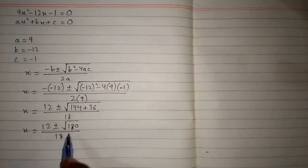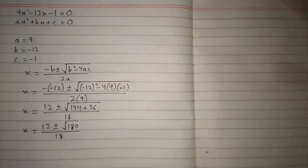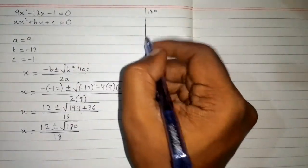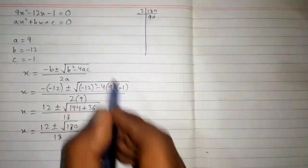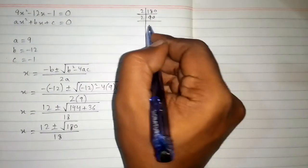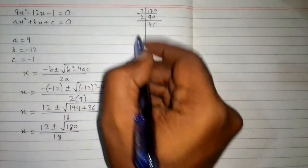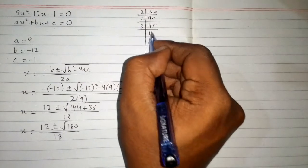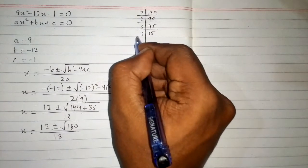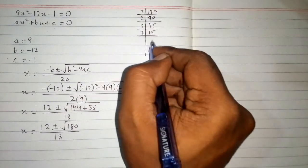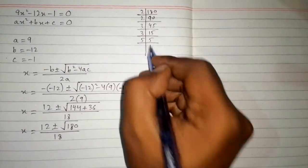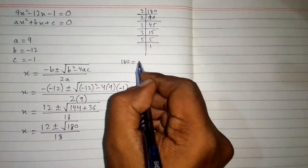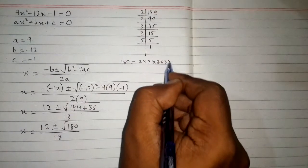Now we will find the square root of 180, so we will factorize 180. First of all we will divide by 2, so we have 2 times 90 is 180. Then 2 times 45 is 90. Then we will divide 45 by 3, so we have 3 ones are 3, then 3 fives are 15. Then 15 can be divided by 3, so we have 5 and then 1.